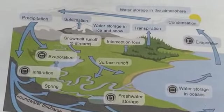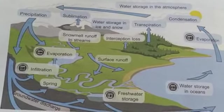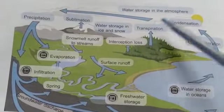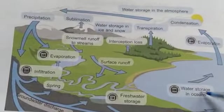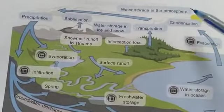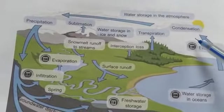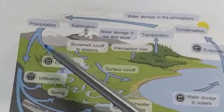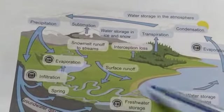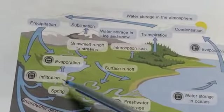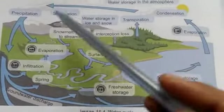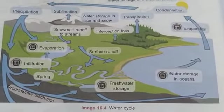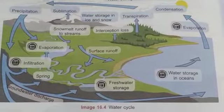Snow caps and glaciers undergo sublimation, where solid ice is directly converted to vapor without passing through the liquid state. Evaporation, transpiration, interception loss, and sublimation all occur, sending water into the atmosphere. In the atmosphere, condensation takes place, followed by precipitation, where water comes back to earth as rain.